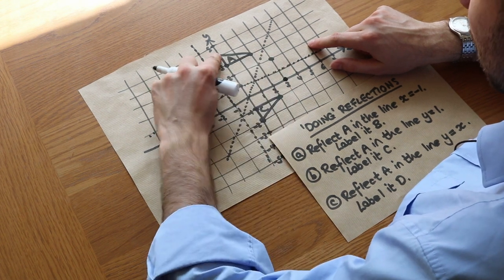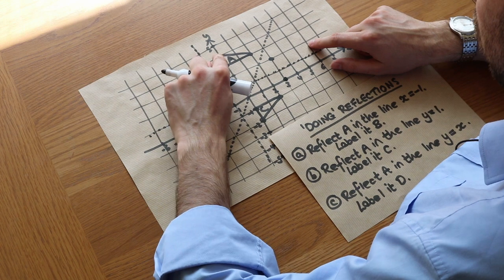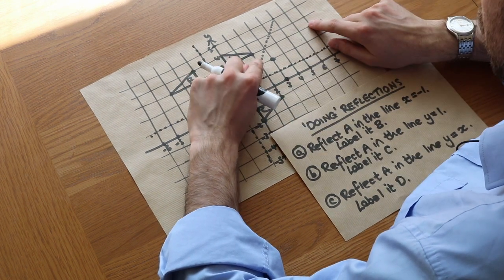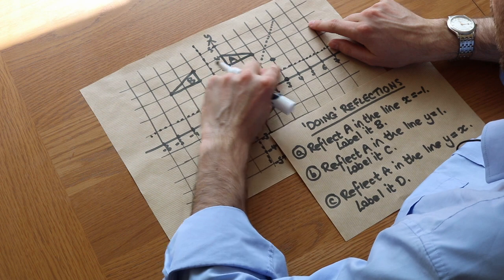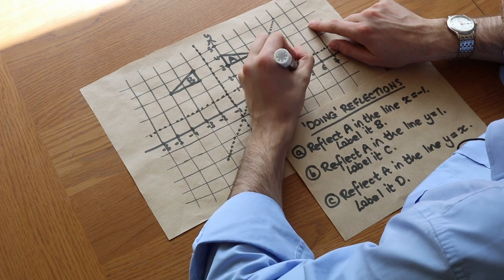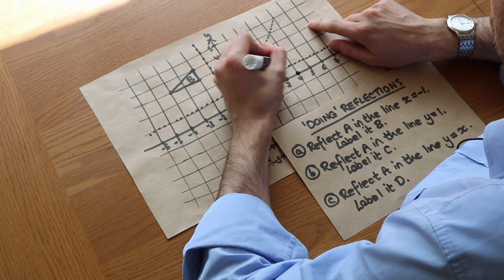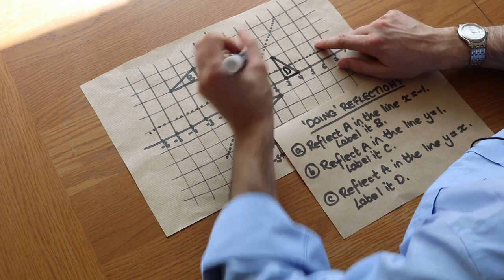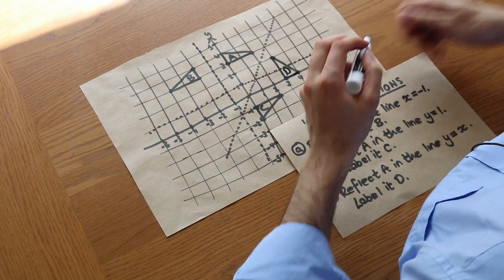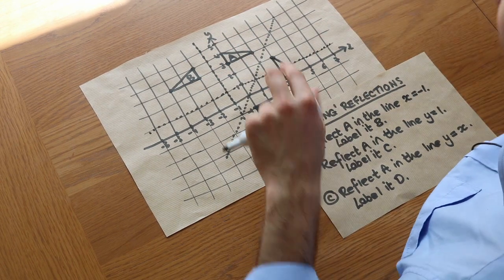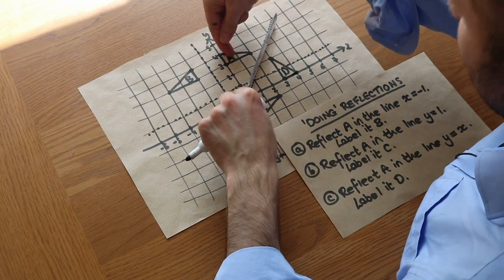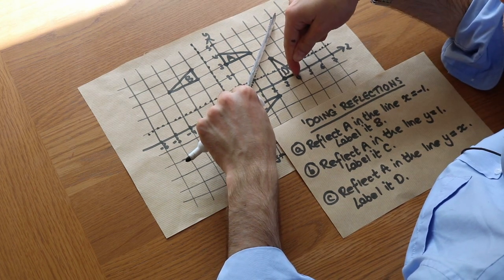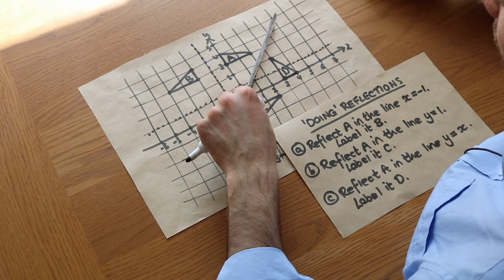And finally this point up here: one two squares towards the line of reflection, then one two squares the same again — it ends up here. Joining that up we get shape D. And that looks right — if we put our mirror here we can see that A looks like it's been reflected over to get this mirror image at D.